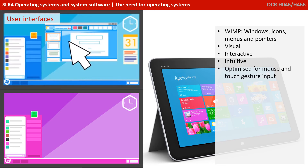The user interface is a catch-all umbrella term for the way in which you interact with the computer as a human being. There are a number of ways of providing that interaction through an operating system, and one of the most common and familiar is what's known as the graphical user interface, or GUI. We've got windows, icons, menus, and the pointer — and this is often known as a WIMP interface: windows, icons, menus, and pointers. It's a very visual and interactive interface, quite intuitive to use, so it's ideal for beginners, and it's optimised for mouse and touch gesture input.